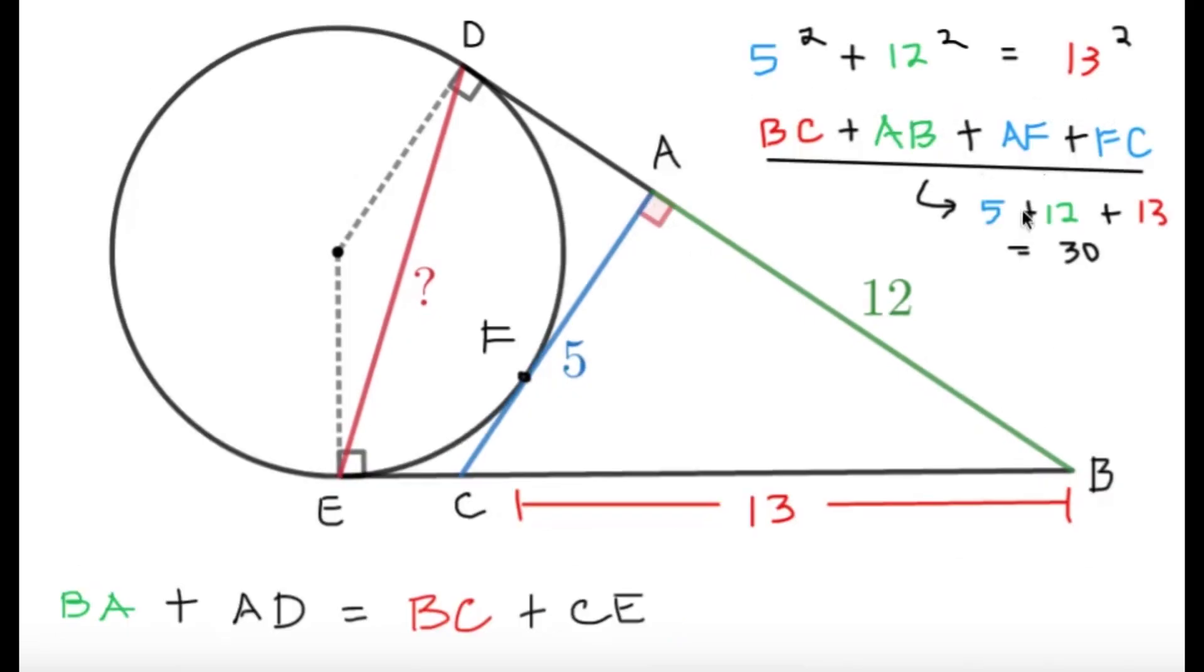We can use Pythagorean to get that the hypotenuse here is going to be 13. And here, I just labeled some points for reference.